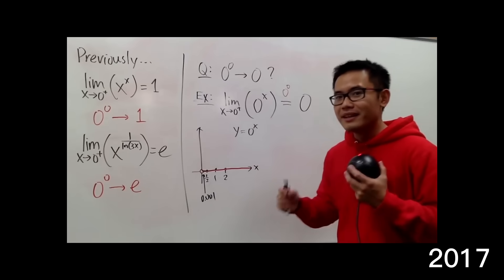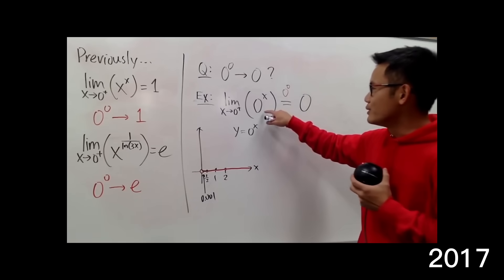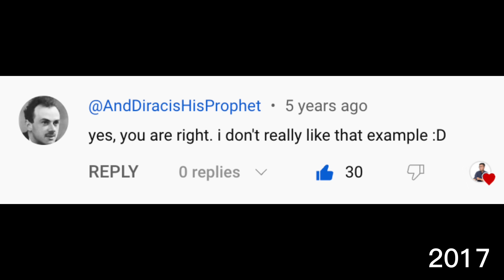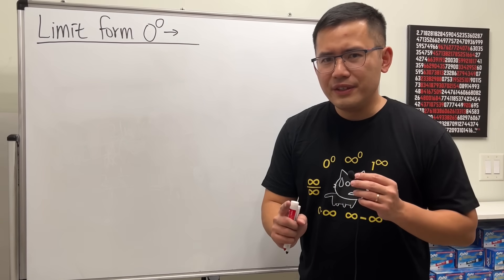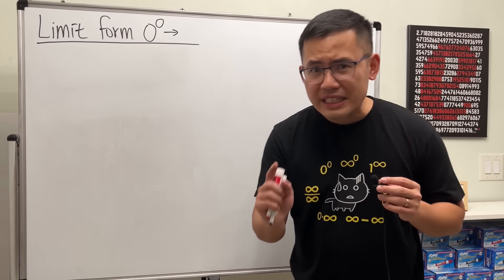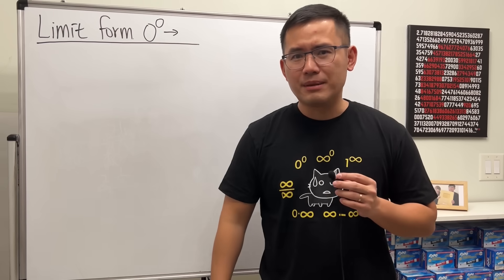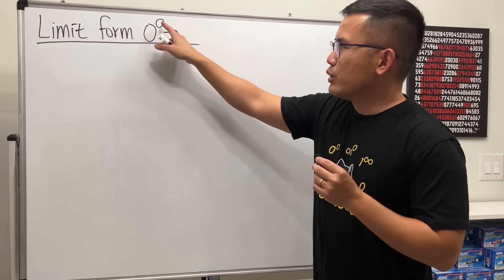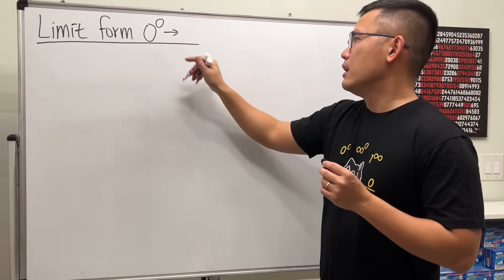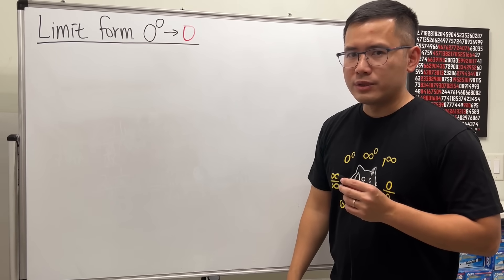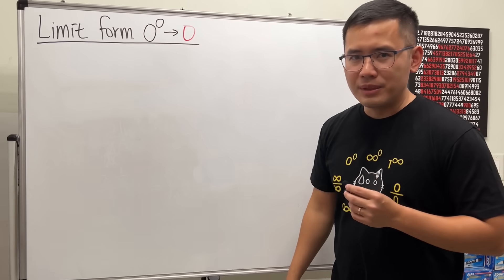Some of you guys may not like this example because we used zero for the face already, so it's kind of like cheating. This is the video that I really wanted to make since 2017. Today, I will give you guys a legitimate example of a limit with the indeterminate form zero to the zero's power, and the answer is zero. I finally came out with an example after so many years.